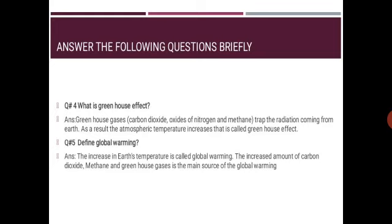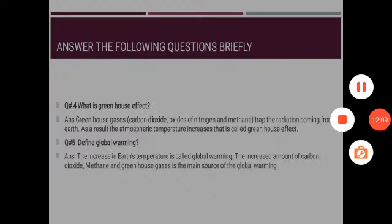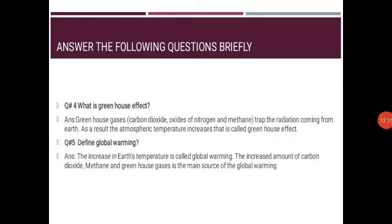Question 4: what is the greenhouse effect? Answer: greenhouse gases — for example, carbon dioxide, oxides of nitrogen, and methane — trap radiation coming from the Earth. As a result, atmospheric temperature increases; this is called the greenhouse effect. Question 5: define global warming. Answer: the increase in Earth's temperature is called global warming. The increased amounts of carbon dioxide, methane, and greenhouse gases are the main source of global warming.